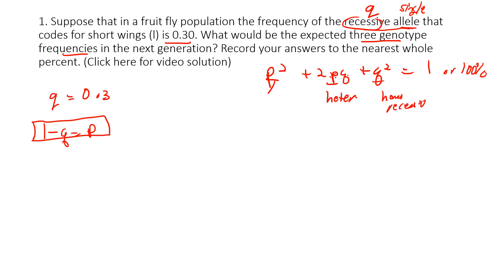We know that 1 minus Q gives us P. If we have Q, we go 1 minus 0.3 equals P, which is 0.7. Let's put a box around that because that's the key information that allows us to insert this into the formula to find the three genotypes.